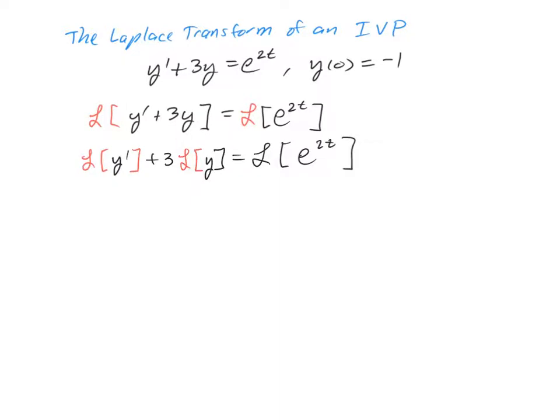From earlier we saw that the Laplace transform of the first derivative is s times the Laplace transform of y minus the initial condition y of 0. Then we have 3 times the Laplace transform of y, which we'll write as capital Y of s, and the Laplace transform of the exponential function is 1 over s minus 2.